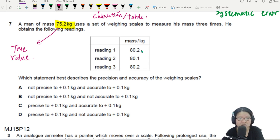So it is precise to plus or minus 0.1 kg. You can tell that the precision is one decimal point because all of these readings are to one decimal point.